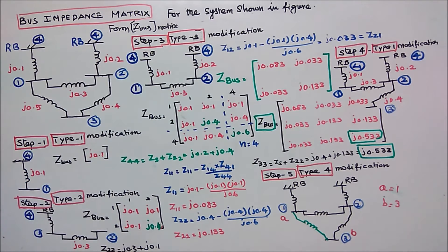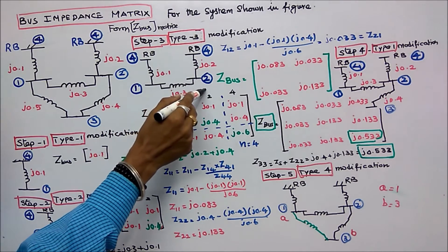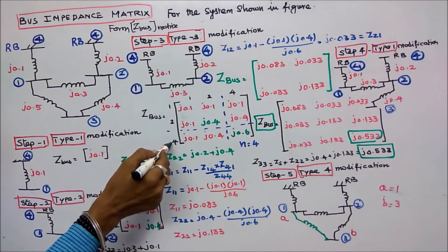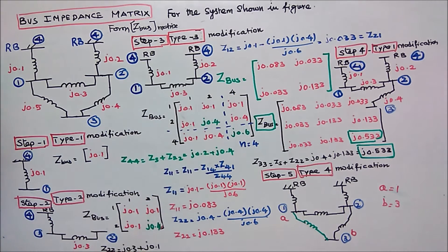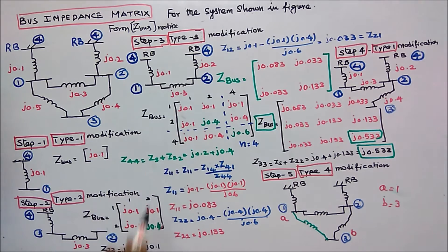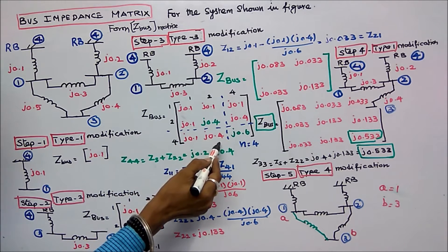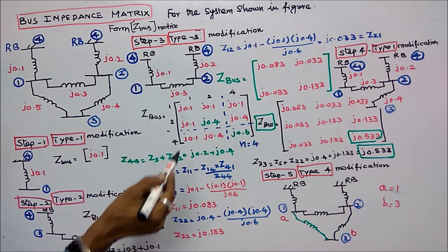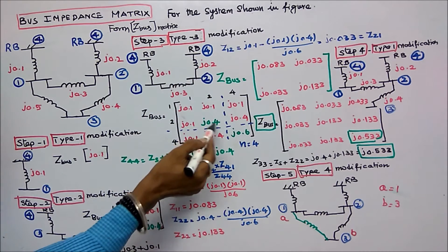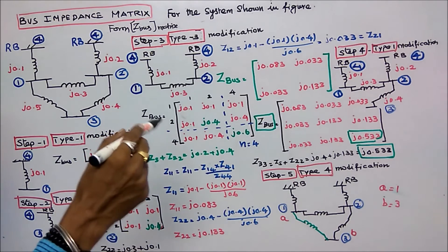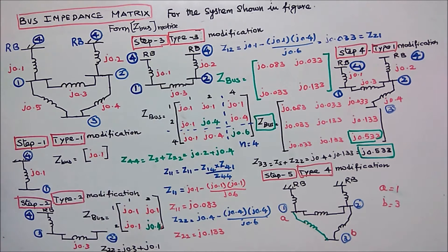Step three is a type three modification. I am connecting bus two to the reference bus four. Now I got a three by three matrix. The old matrix values are: Z11=j0.1, Z12=j0.1, Z21=j0.1, Z22=j0.4. Z44 equals Zs plus Z22; Zs equals j0.2, Z22 equals j0.4, so Z44 equals j0.6. Now I have to eliminate the reference bus using Kron's method.